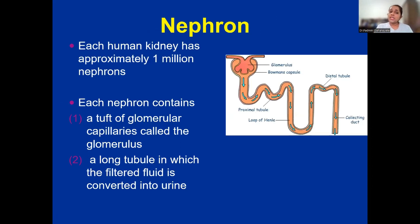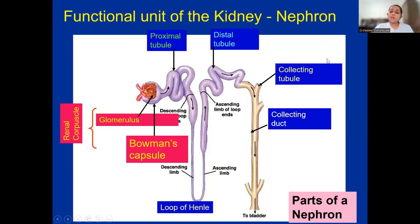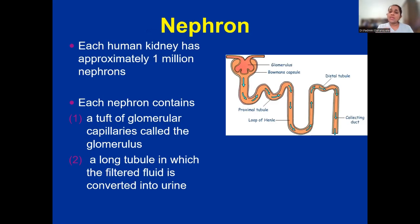Each human kidney has approximately one million nephrons. Each nephron contains two major portions: the tuft of glomerular capillaries — that is called the glomerulus — as well as the long tubule in which the filtered fluid is converted into urine, divided into proximal convoluted tubule, distal convoluted tubule, and connecting tubule.